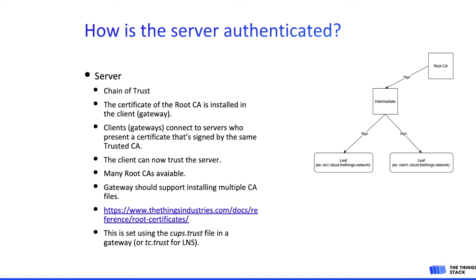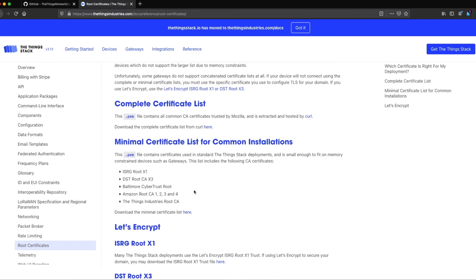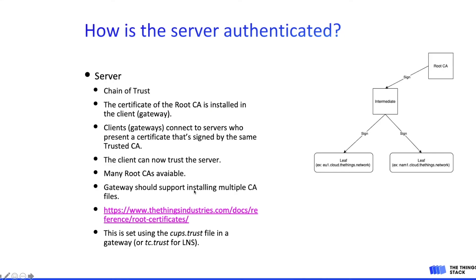One important thing is that there are many root CAs available in the market and the gateway should support installing multiple CAs. If you go to the documentation link, there is a list of commonly used CAs — for example ISRG and DST, both from Let's Encrypt, Amazon, and Things Industries has its own root CA. This is what we call a minimum certificate list, and we expect all gateways to support having multiple CAs installed to make server-side TLS management much easier. This value is set using the CUPS.trust file in the gateway, which is a PEM-encoded file, or TC.trust in case of LNS, but we recommend setting the CUPS first.